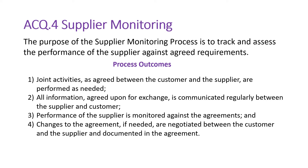The performance of the supplier is monitored against the agreement. Each and every supplier will have their own agreement covering whatever is in the scope of the supplier's work. Based on the agreements or contracts made with the customer and the supplier, we need to monitor their performance. If you give work to the supplier, or if you are a supplier, then your customer will monitor your activities. Changes to the agreement, if needed, are negotiated between the customer and the supplier and documented in the agreement.